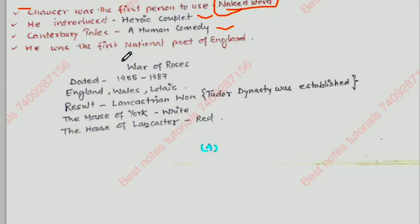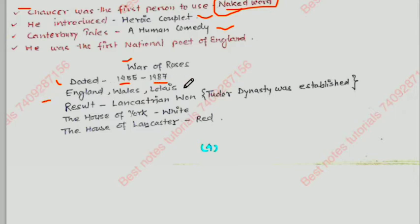The War of Roses started in 1455 and ended in 1487. It included England, Wales, and Flanders. The result was that the Lancastrian side won and the Tudor dynasty was established.